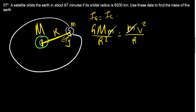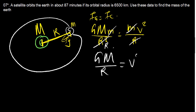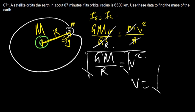Our goal is to calculate the mass of the Earth. We can cancel the small mass m from both sides, and also cancel one R, leaving us with G times M over R equals V squared. Taking the square root of both sides gives V equals the square root of G times the mass of the Earth over R.